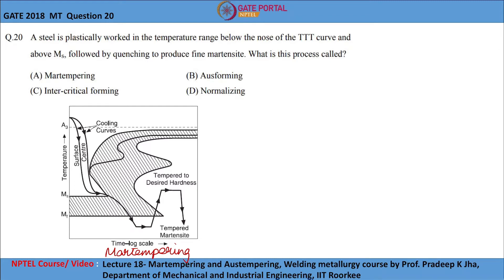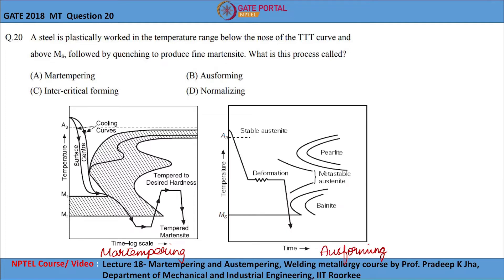In ausforming, the steel is heated above austenitizing temperature (A3), then supercooled to the temperature below the nose of the pearlitic C curve. This metastable austenite is deformed heavily, and it must be ensured that no transformation happens during this deformation process. This deformed metastable austenite is then quenched to form a completely martensitic structure. This process involves mechanical deformation and the final microstructure is 100% martensite.